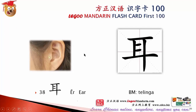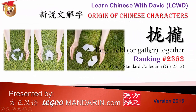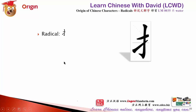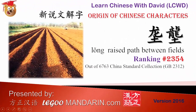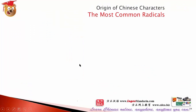The radical is Er (ear). And this radical is hand. The phonetic part is long. Read together it is long, meaning to use a hand to put things together. Then this long — the radical is 土 (soil), so this long means the wide path between fields, normally used for walking. Long.